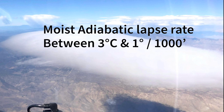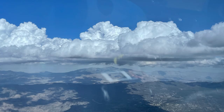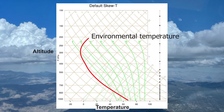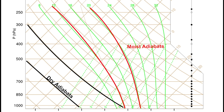The moist adiabatic lapse rate varies with temperature and ranges from about the same as the dry adiabatic rate of 3 degrees per 1,000 feet in very cold conditions to about 1 degree Celsius per 1,000 feet in warm conditions. To determine where the atmosphere falls on this stability scale, we need to plot two different temperature trends on an adiabatic lapse rate chart, or SkewT chart, where altitude is on the vertical axis and temperature is on the horizontal: the environmental temperature at each altitude, and the temperature of the parcel of air to be displaced. The chart has lines showing the adiabatic lapse rate, and we can plot the parcel's temperature by drawing a line parallel to those lines.